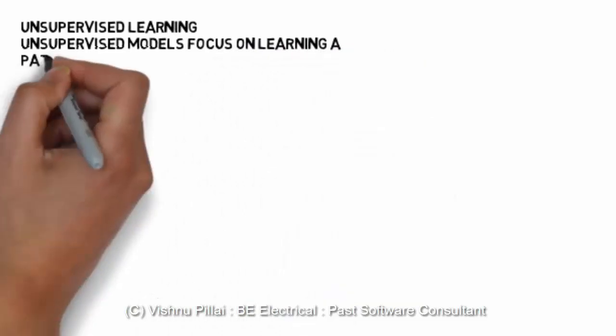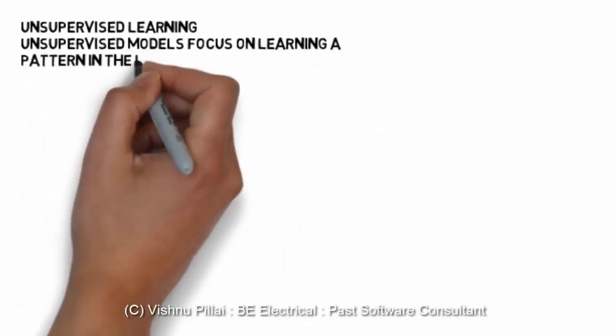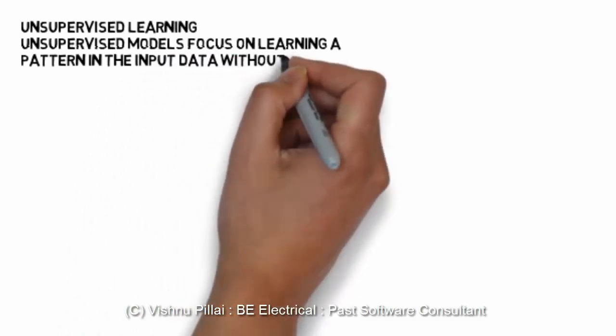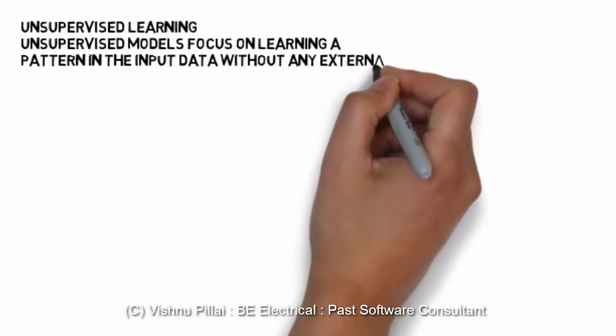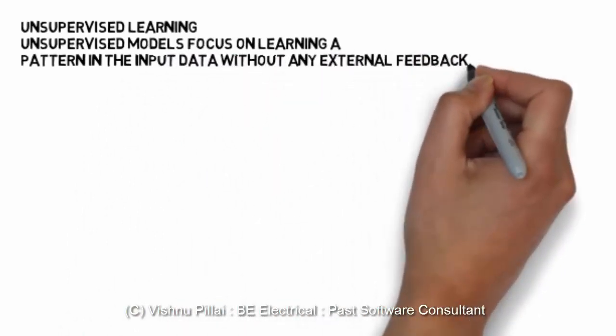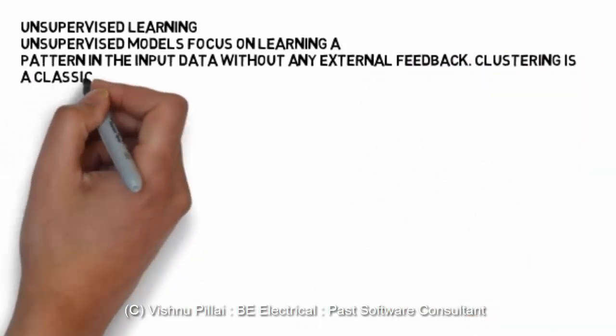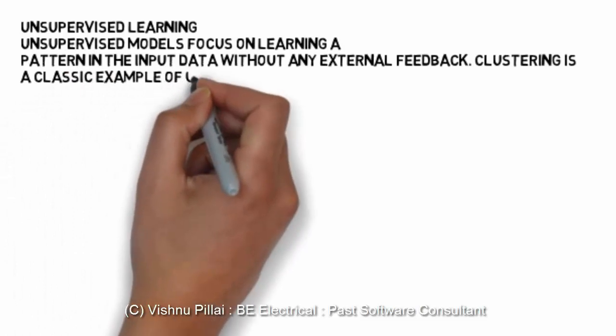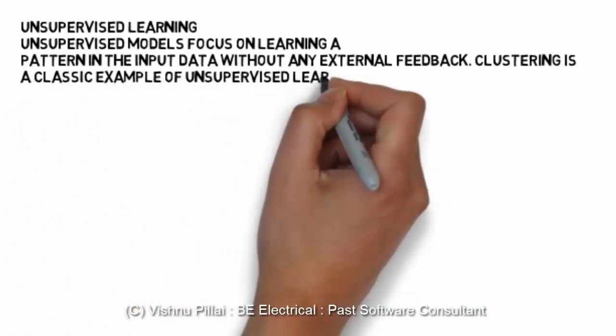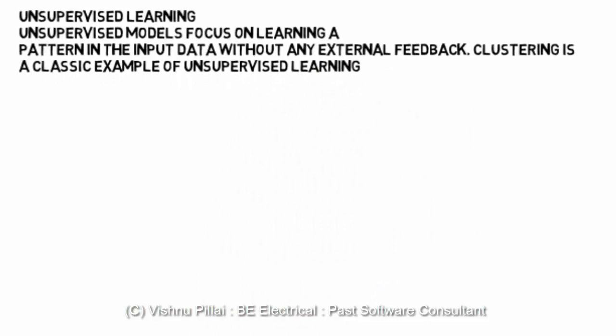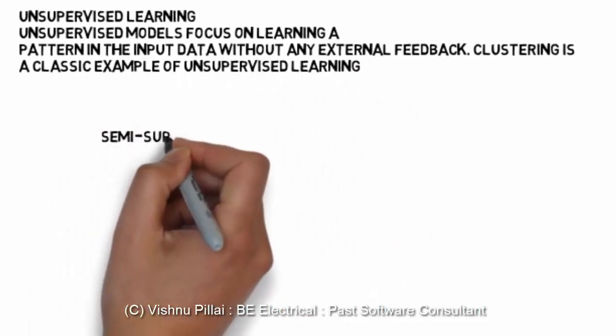An unsupervised model focuses on learning a pattern in the input data without any external feedback. There is nobody to monitor what the agent is learning or doing. Such kind of learning is unsupervised learning where the agent will learn on its own without external help.